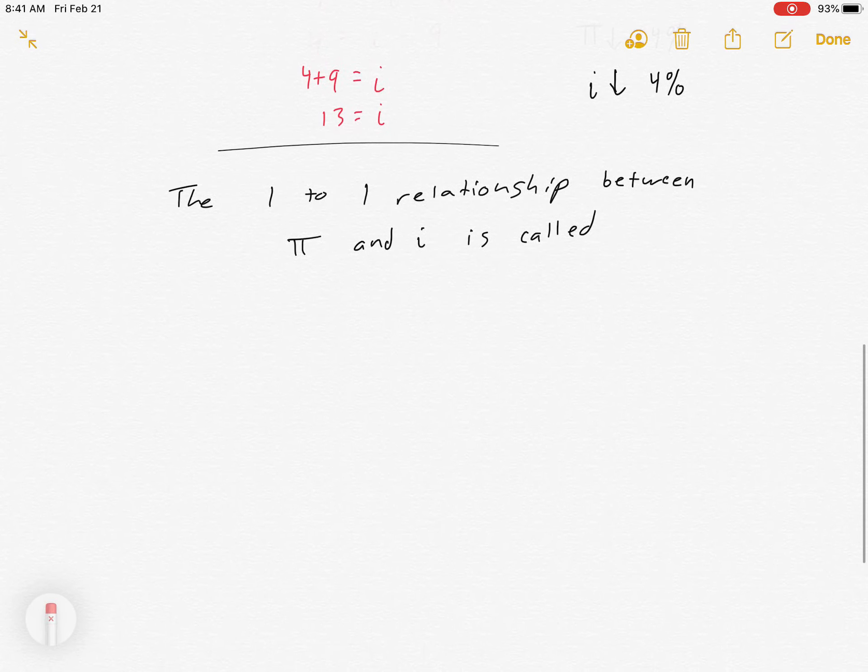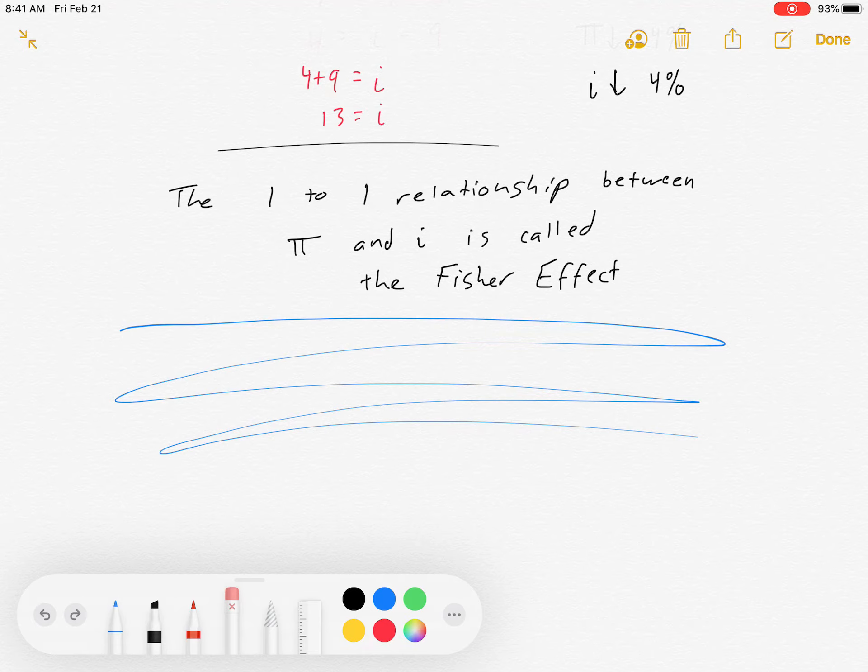And here it is in writing so you can believe it. The one-to-one relationship between inflation and nominal interest rates is called the Fisher Effect.